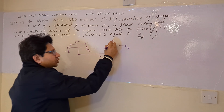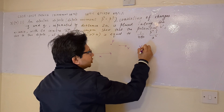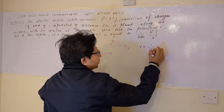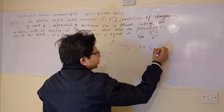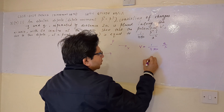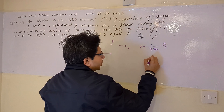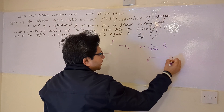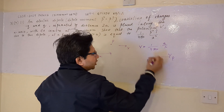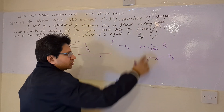The basic concept used here is that the potential is calculated by the formula V equals 1 upon 4 pi epsilon naught times q upon r, where q is the charge and r is the distance from the charge to the point P where we are calculating the potential.